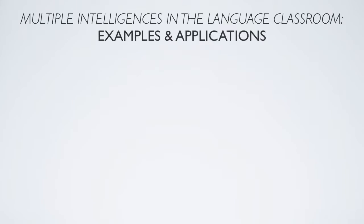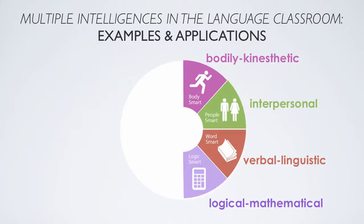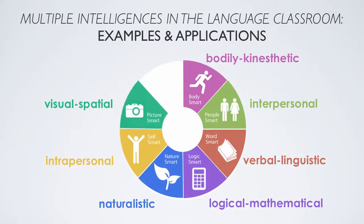I'd like to take a look at multiple intelligences now, one by one, specifically as they apply to different types of people and the implications that those have on the language classroom as we consider the types of learners that our students might be. The eight I'm going to focus on are: bodily kinesthetic, interpersonal, verbal linguistic, logical mathematical, naturalistic, intrapersonal, visual spatial, and musical.